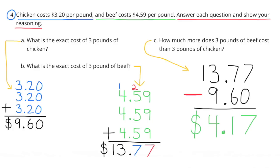Part C: How much more does three pounds of beef cost than three pounds of chicken? Since three pounds of beef cost $13.77 and three pounds of chicken cost $9.60, we'll have to subtract $9.60 from $13.77, and that comes to $4.17. Three pounds of beef cost $4.17 more than three pounds of chicken.